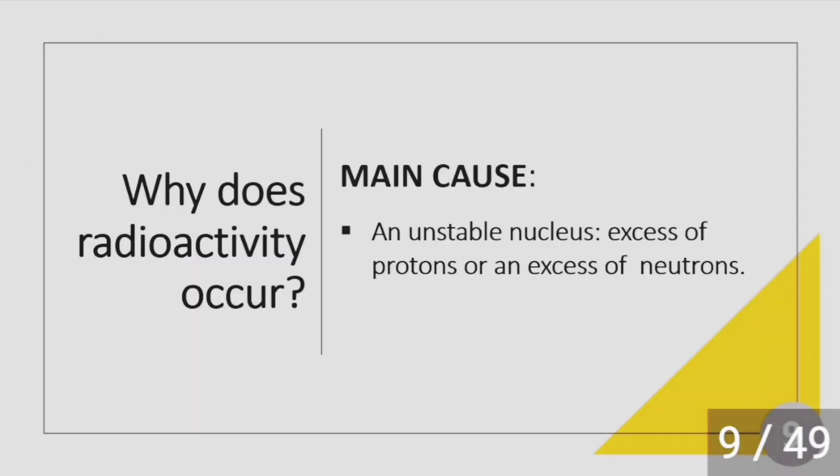Why does radioactivity occur? Radioactivity is all about elements losing particles from their nucleus — why would that happen? The main cause is an unstable nucleus. If there is an excess of protons or neutrons in the nucleus, they tend to get rid of these particles to become stable.